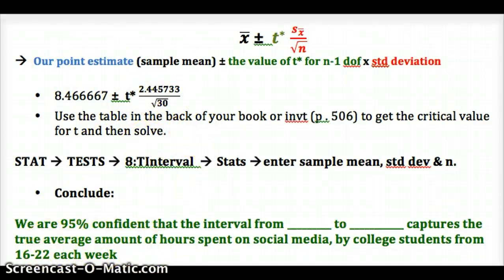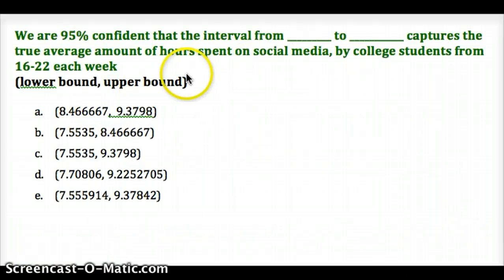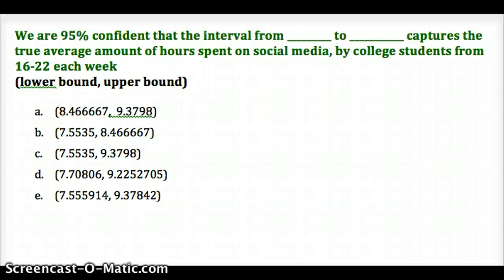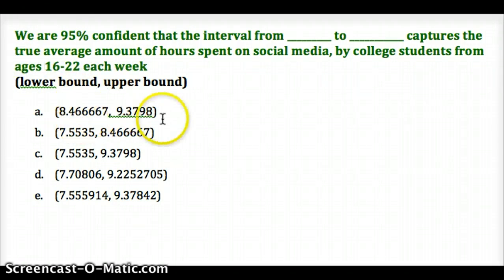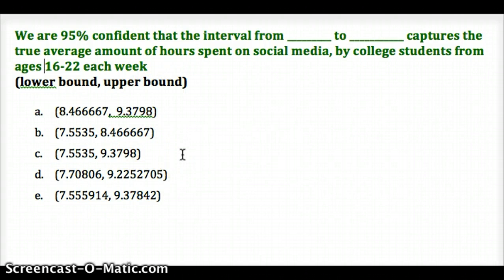Here are your answer choices. We are 95% confident that the interval from some lower bound to upper bound captures the true amount of hours spent on social media by college students from ages 16 to 22 each week. The answers are in the form of lower bound, upper bound — answer A, B, C, D, or E — after you've had a chance to finish the calculation on your own. Then take a look at the guiding question and answer that.